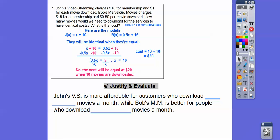So here's just that word problem right there. So they ask a couple of questions. So John's video streaming is more affordable for customers who download... Well, his is only $10 to start up. And Bob's is $15 to start up. But John's downloads is $1 per download. And Bob's is $0.50 per download.